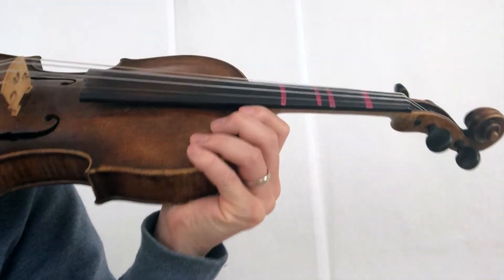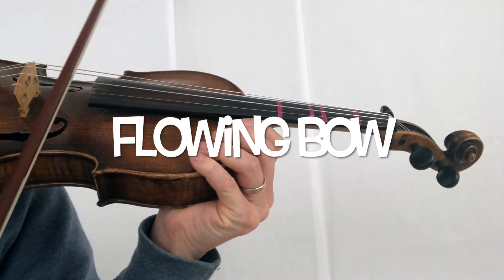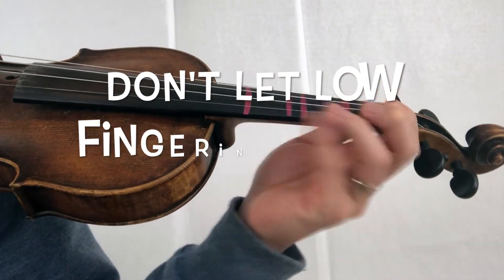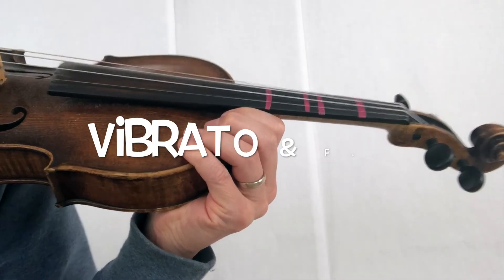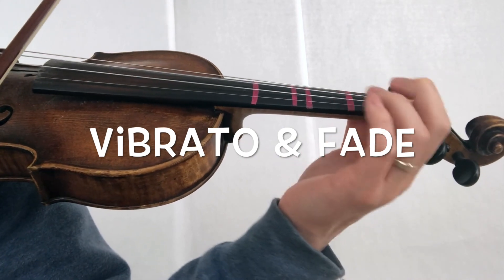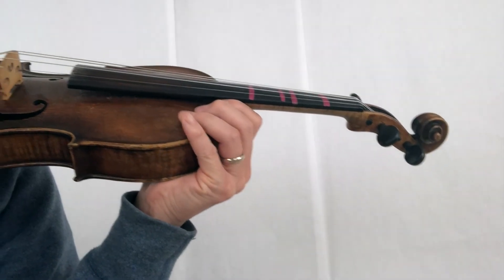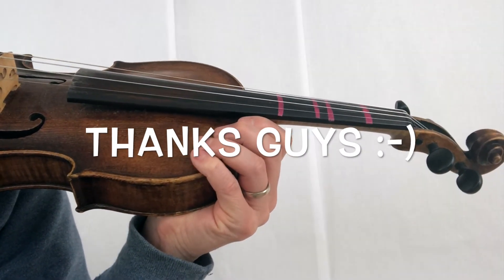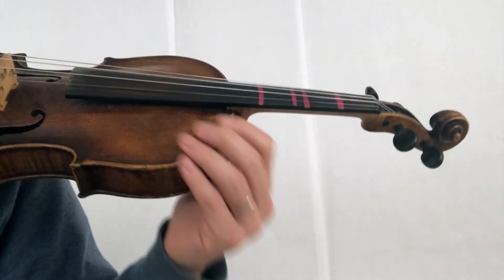Just to recap, make sure the bow is flowing like this. Don't let the low fingering trap the regular fingering down, and then add the vibrato, and make sure you fade. And then you'll make this song sound very beautiful. Alright, until next time, thank you for watching. Please like and subscribe, and bye.